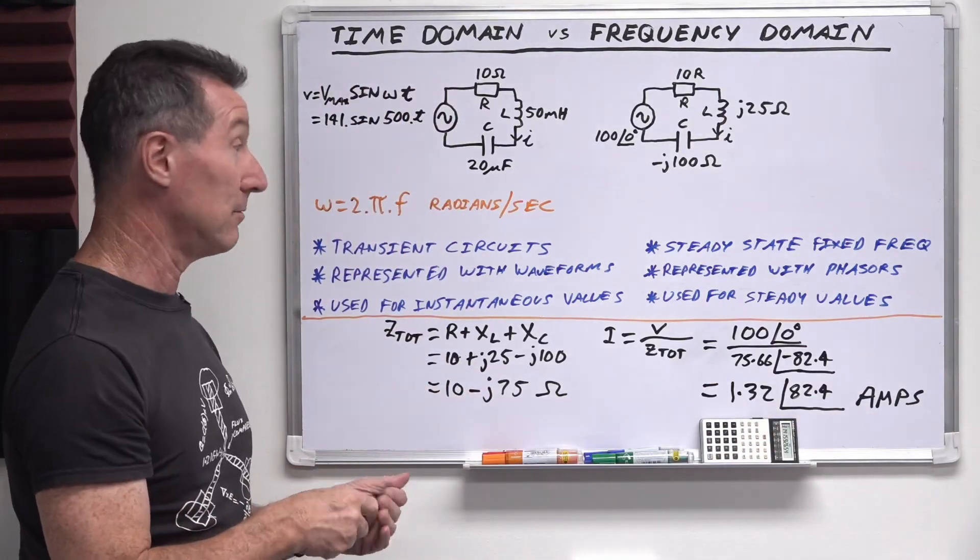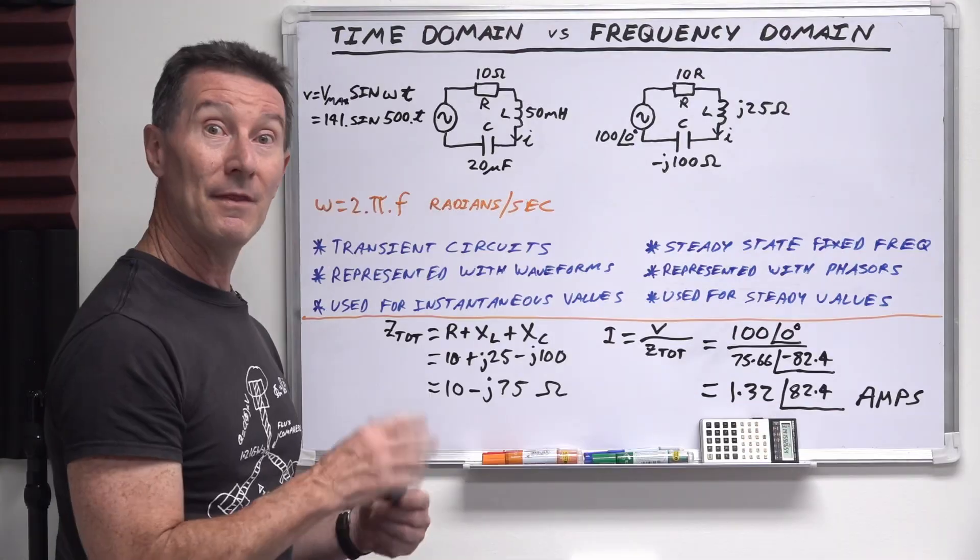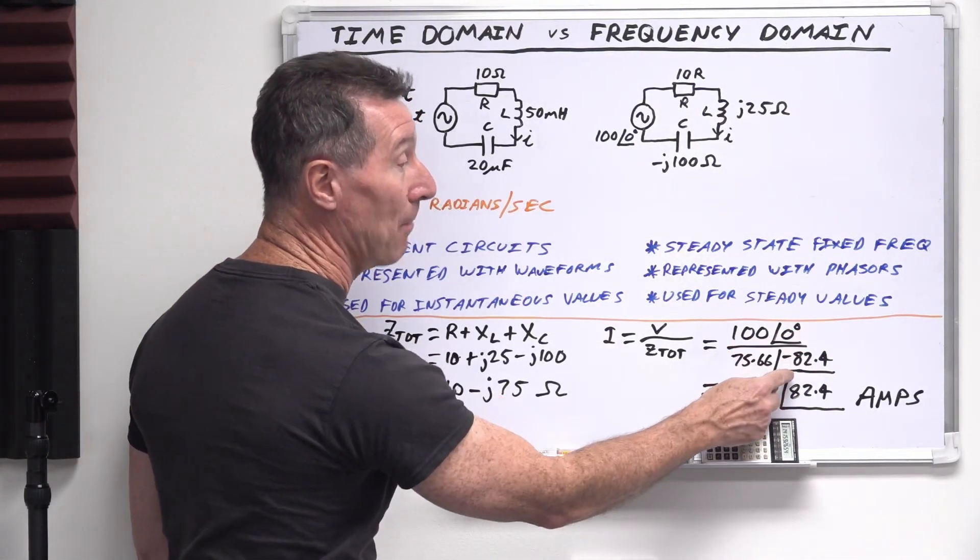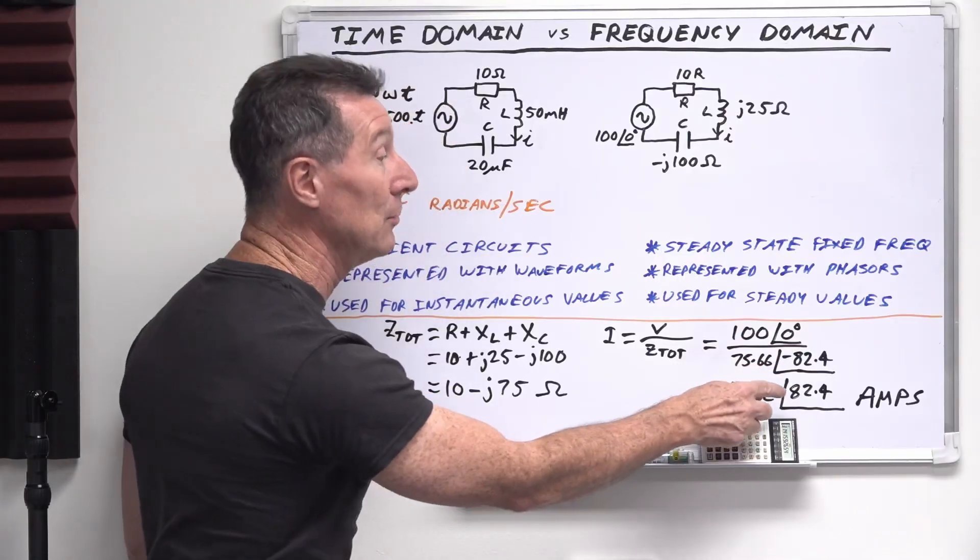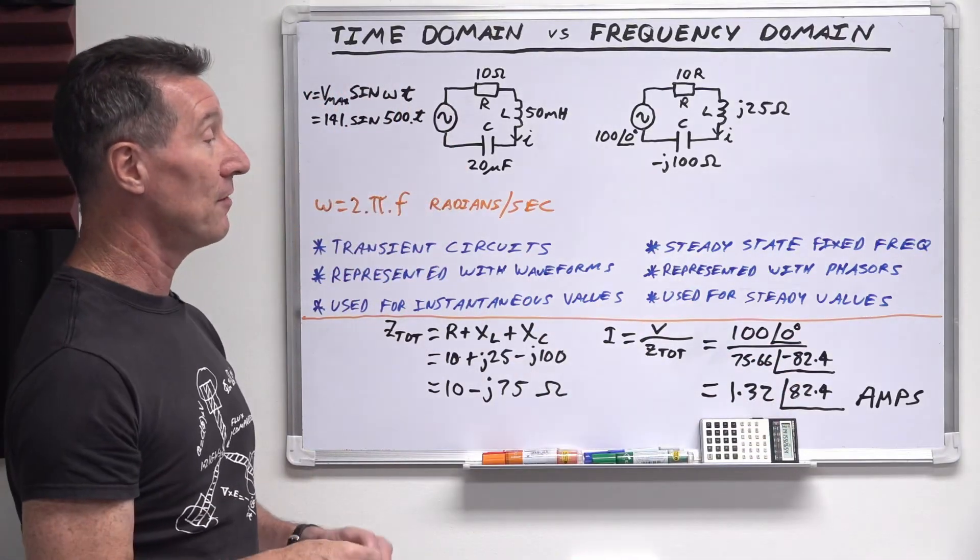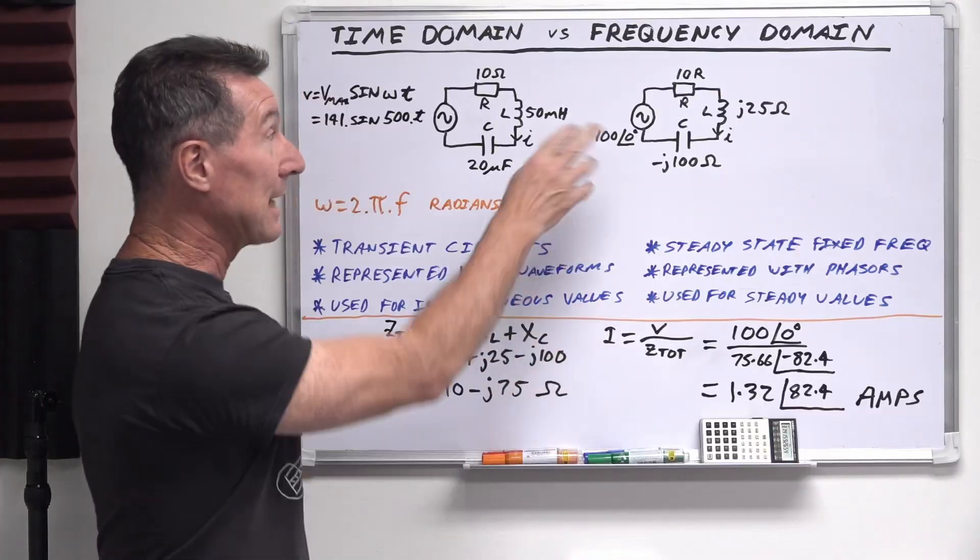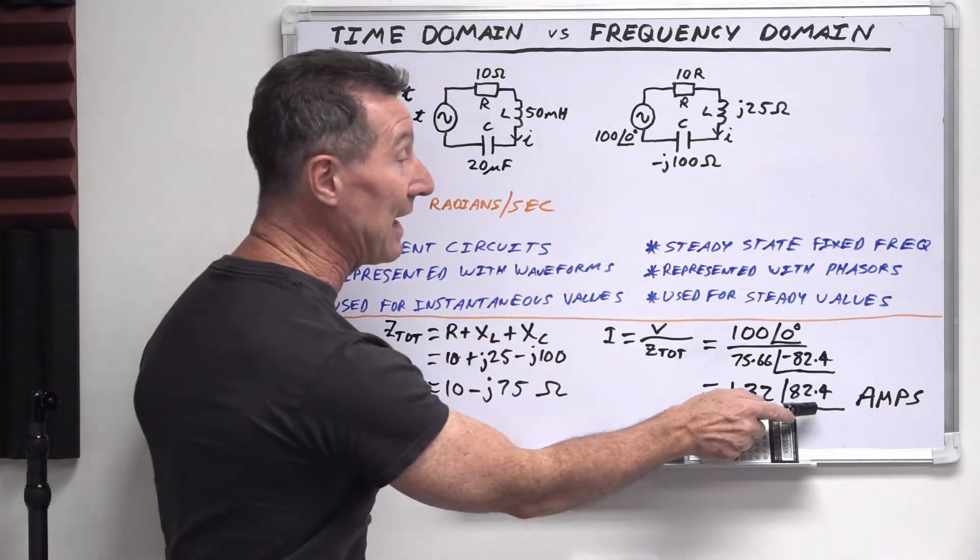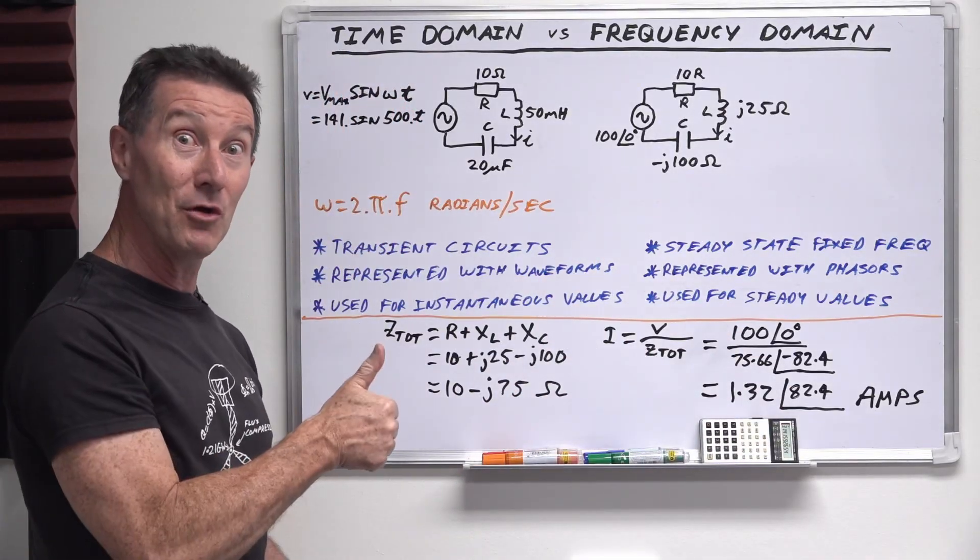That's what's the value of current that's flowing in the circuit. And then the complex part, when you're doing a division, you just subtract them. So 0 minus minus 82 gives you positive 82.4. So the current flowing in the circuit is 1.32 amps with a phase of 82.4 degrees. Beauty!